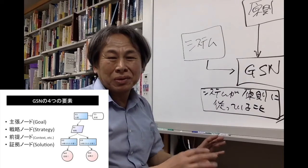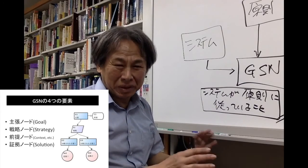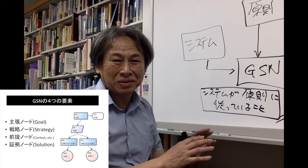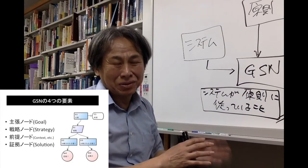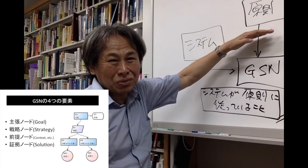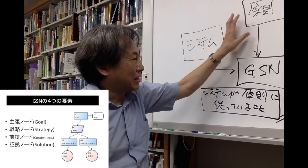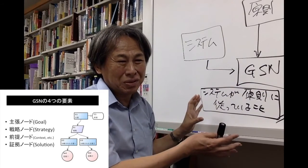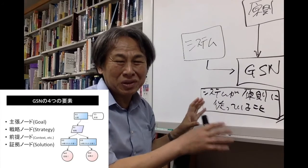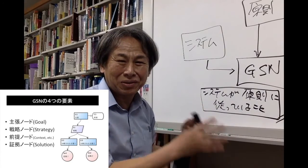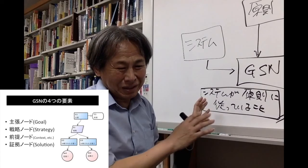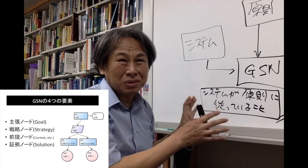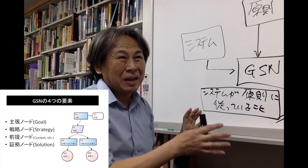When it's difficult to explain the goal directly, you want to divide the goal into several sub-goals. To show the underlying thinking of the division, a strategy node is used. A context node is used to show a context or an assumption on which the following argument is developed. Finally, a solution node is used to show that a leaf goal is supported by an evidence.